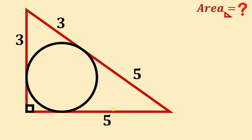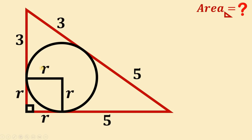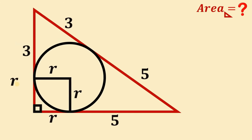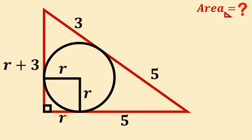Now let's draw the center of this circle by drawing some radii. Let's call this radius R. Since it forms a square, all sides must be the same, so they are all R. Now, taking note of this leg — combining 3 and R — one leg of this right triangle must be equal to R plus 3. Also, the other leg of this right triangle must be equal to R plus 5.